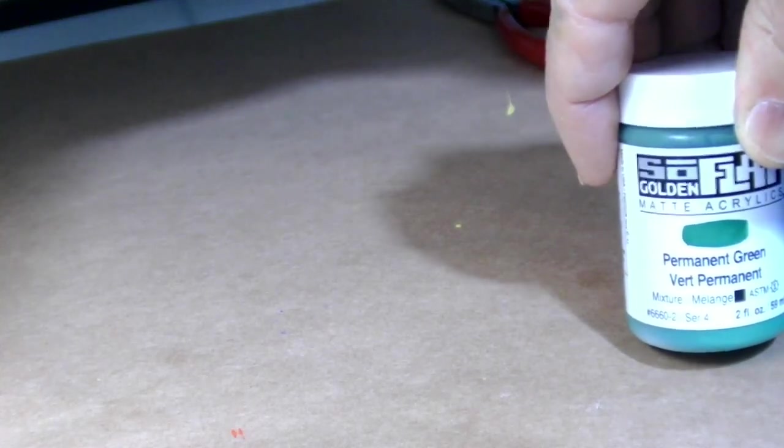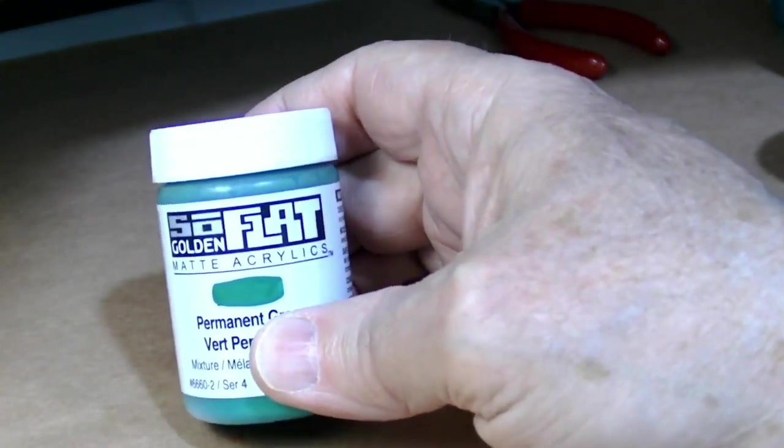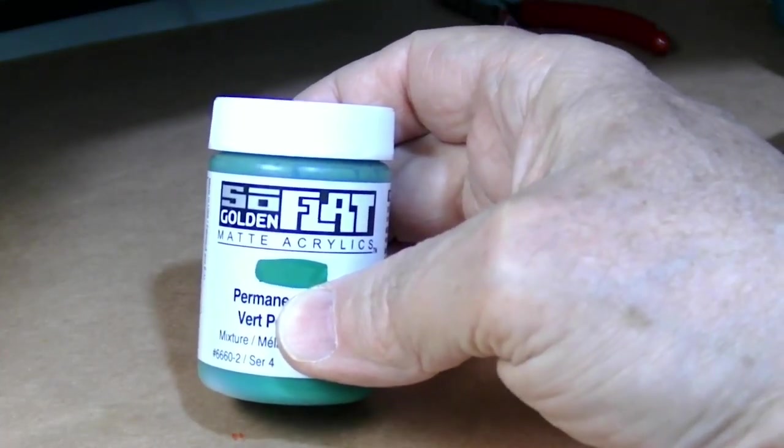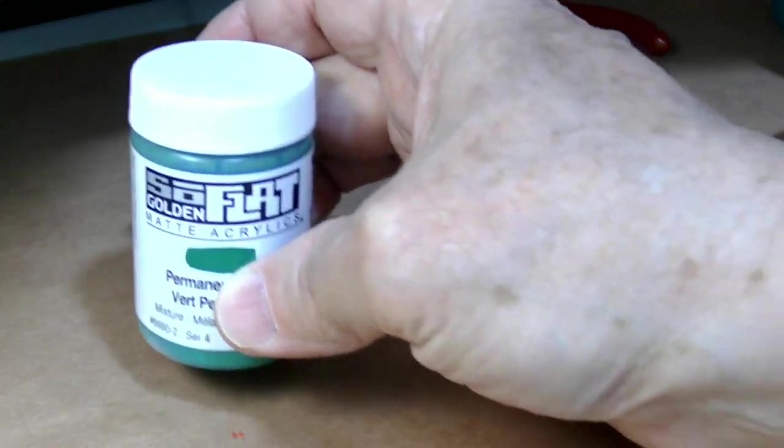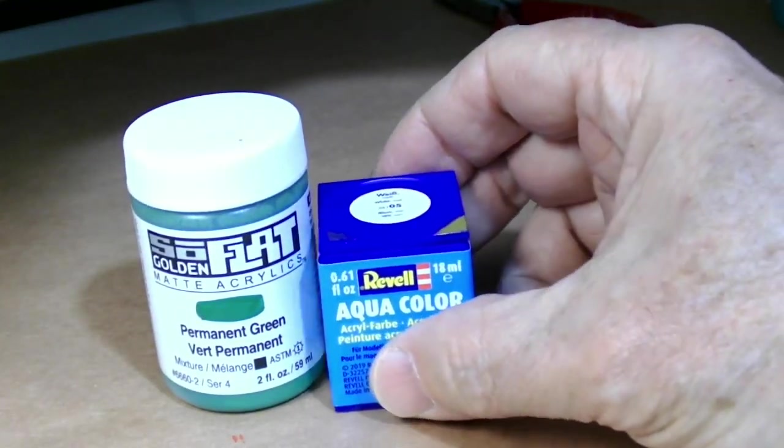Here's the scene of the crime. We're talking about thinning paint today, and this is a topic which is ridiculously complicated. The best advice I can give you is to pick a paint and stick with it. If you like Goldensо Flat, pick that and stick with that. If you like Revell Aqua Color, stick with that.